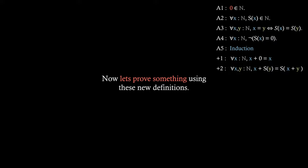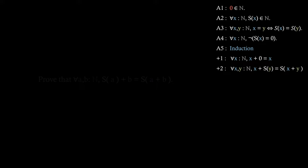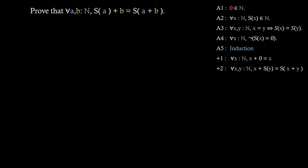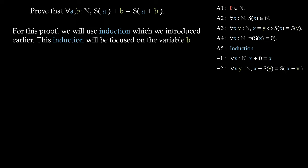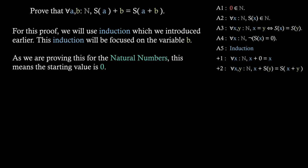So let's actually prove something using these new definitions. The statement is: for all natural numbers a and b, the successor of a plus b equals the successor of a plus b. You might think this is literally the same as the second definition of addition, but we actually don't know that addition is commutative yet — meaning we don't know that x plus y is the same as y plus x. For this proof we'll use induction, focused on the variable b. Since we're working with natural numbers, the first value is zero.